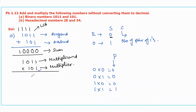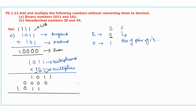Now the multiplication process starts from the LSB of the multiplier. The LSB of the multiplier is 1. When we multiply this 1 with the multiplicand, the same number is obtained: 1011. Now move to the next bit, 0. When we multiply the multiplicand with 0, the total product will be 0000, shifted one position left. Again move to the next bit position, 1. When we multiply the multiplicand with this 1, the same number is repeated: 1011, shifted two positions left. We should add all these partial products to get the final product.